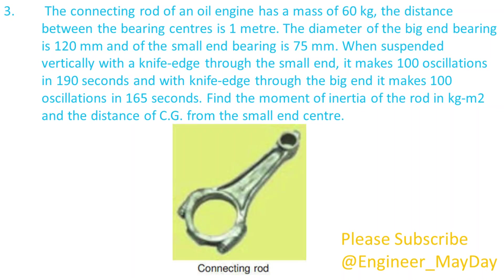Here is a third question. The connecting rod of an oil engine has a mass of 60 kilograms. The distance between the bearing centers is 1 meter. The diameter of the big end bearing is 120 millimeters and of the small end bearing is 75 millimeters. When suspended vertically with a knife edge through the small end, it makes 100 oscillations in 190 seconds, and with knife edge through the big end it makes 100 oscillations in 165 seconds. Find the moment of inertia of the rod in kg squared meters and the distance of center of gravity from the small end center.